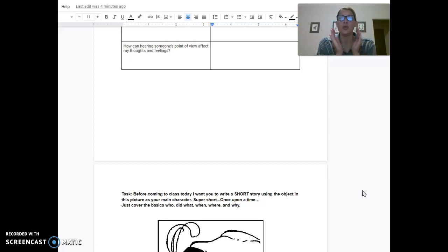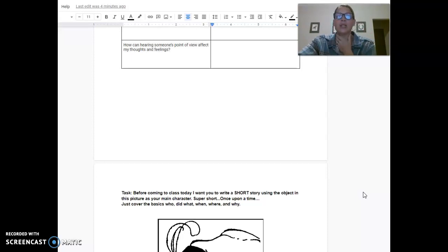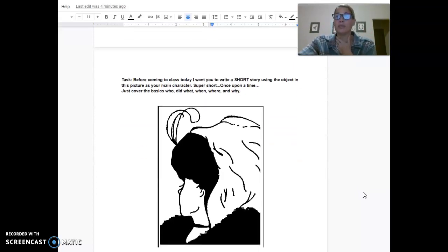I want you to write a short story. Maybe one paragraph. Maybe five sentences. Using the object in this picture as your main character. Super short. Okay, again. Just what thoughts come to your mind when you see this picture. Look at the character in this picture.